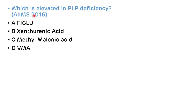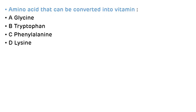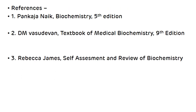The third question, asked in AIIMS 2016: which is elevated in pyridoxal phosphate (PLP) deficiency? PLP is the active form of vitamin B6. Options: A) FIGLU, B) xanthurenate acid, C) methylmalonic acid, D) DOMA. The correct answer is B — xanthurenate acid, as we saw in the kynurenine pathway. The last question: which amino acid can be converted into a vitamin? A) glycine, B) tryptophan, C) phenylalanine, D) lysine. Since 60 mg of tryptophan leads to synthesis of 1 mg of niacin, the correct answer is B.